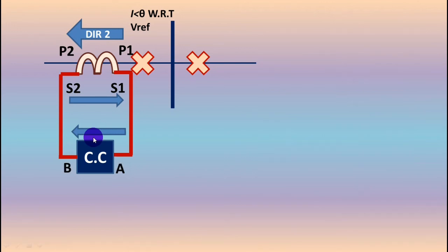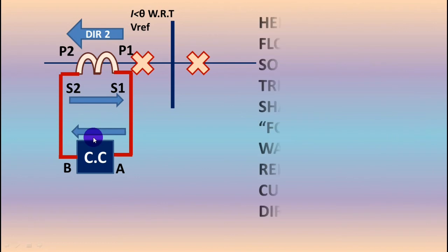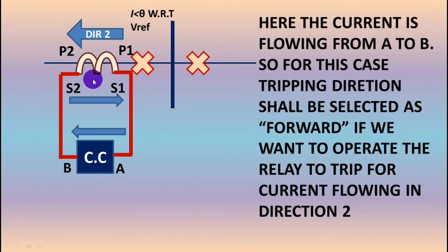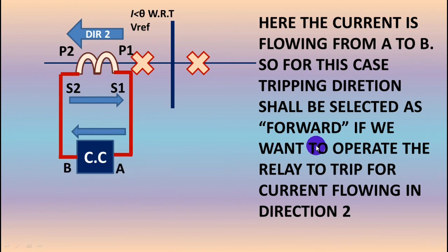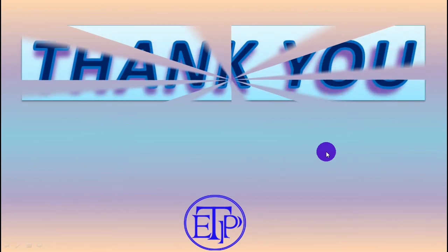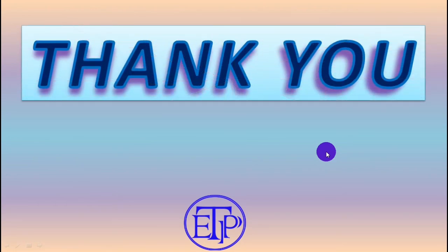Now if you make the relay connection in this alternative way, you have to select forward, because if you want the relay to trip for direction 2, the current is flowing from A to B in this connection — so you select forward. This is how the directional relay detects the direction.